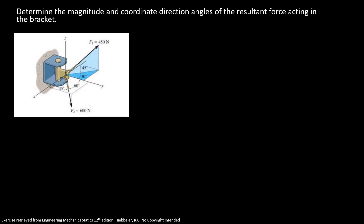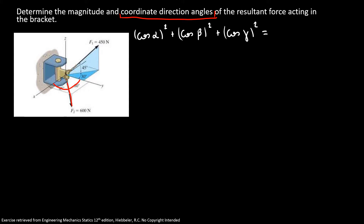Determine the magnitude and the coordinate direction angles of the force acting in the bracket. Remembering what coordinate direction angles are: it's the angle that the force makes with each axis — 45° with the x-axis, 60° with the y-axis, and we don't know the angle with the z-axis. But we can use the property: cosine²α + cosine²β + cosine²γ = 1.